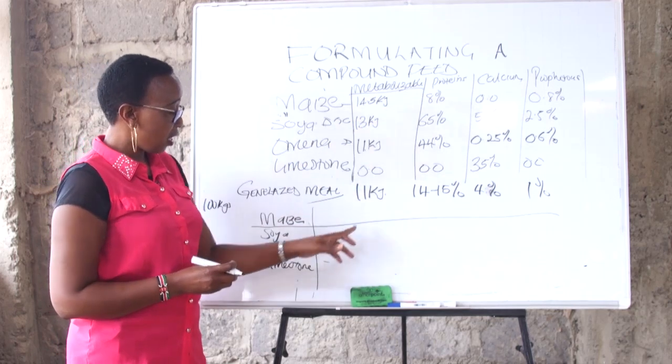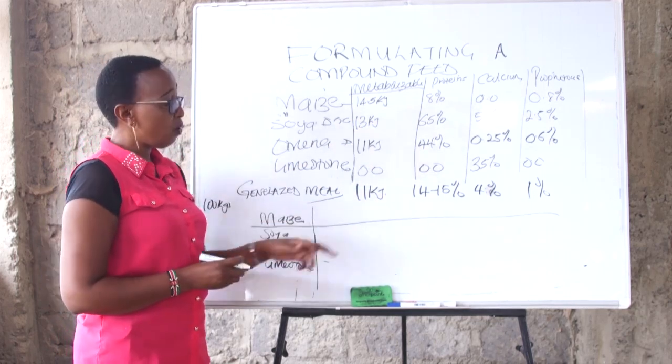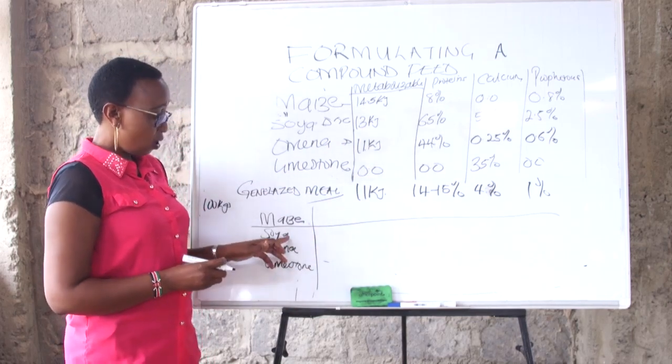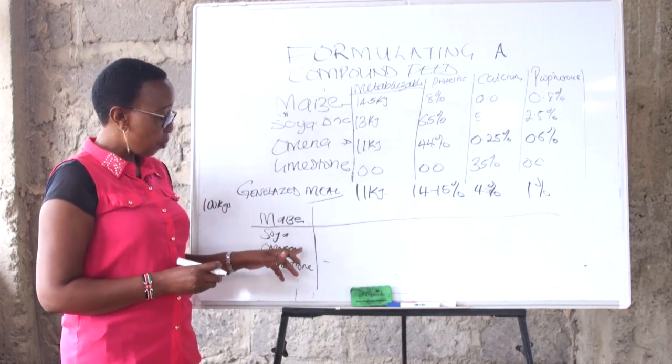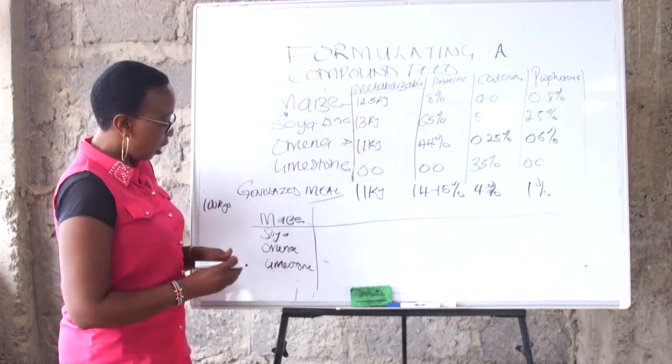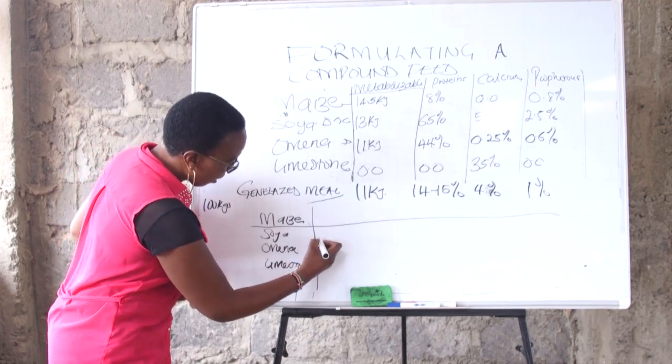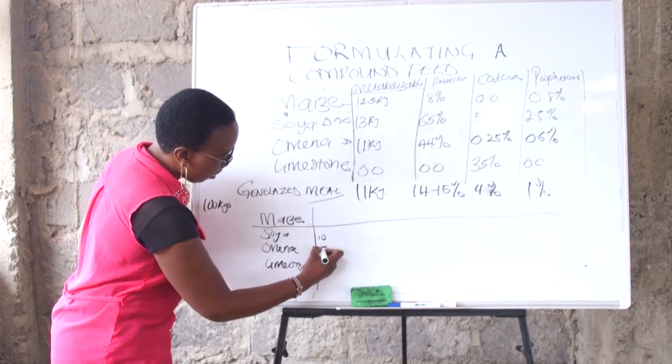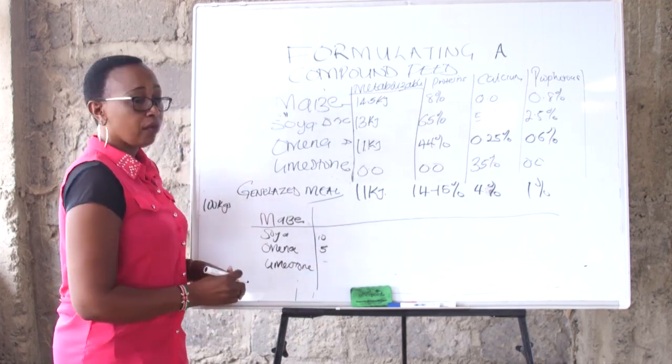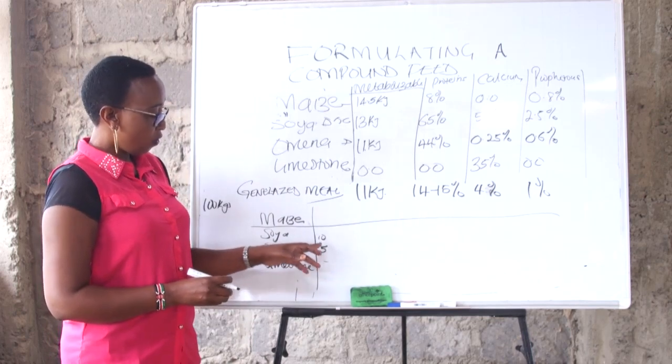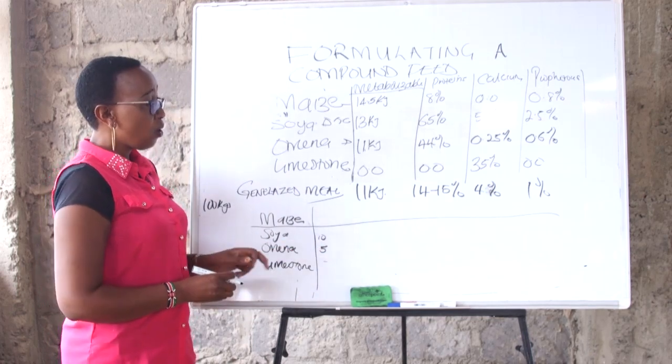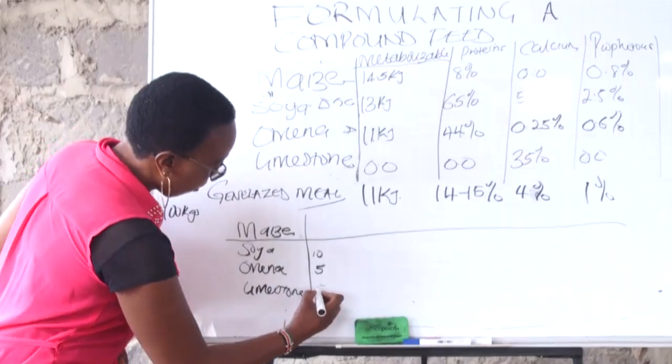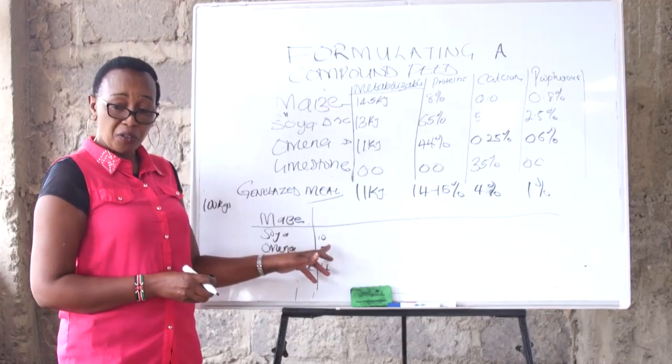We need just 14 to 15 percent of protein. So if you say soya is a little bit cheaper compared to manna, let's just say we can use 10 kilograms of soya and then 5 kilograms of manna. We just need 4 percent calcium, so 4 percent of 100 is 4 kilos.